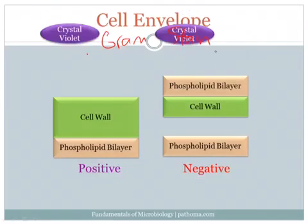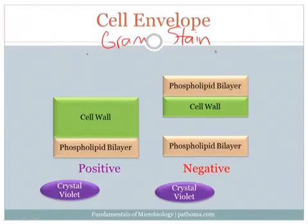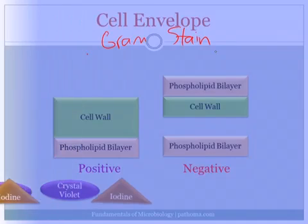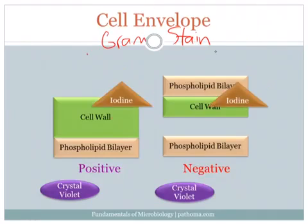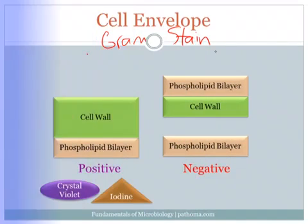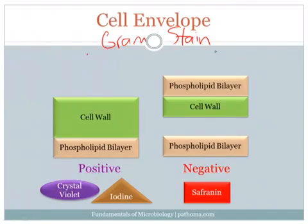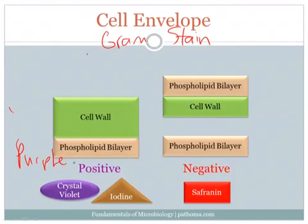We start off by adding a crystal violet dye to both types of bacteria, and then an iodine dye, and then we do an alcohol and water wash. In gram-positive bacteria, the crystal violet and the iodine are retained. However, in gram-negatives, it is washed away. That's why we use a safranin counter-stain for gram-negatives, which gives them their red color. So gram-negatives are red, and gram-positives are purple — a way to remember this is that purple starts with a P, and so does gram-positive.